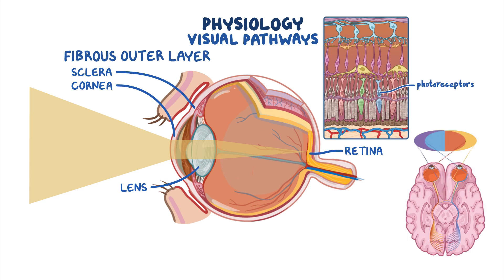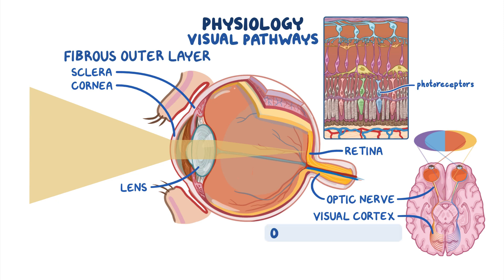These electrical impulses are then carried by the optic nerve into the visual cortex of the brain. Finally, the visual cortex processes the impulses coming from both eyes and fuses them into one clear image.